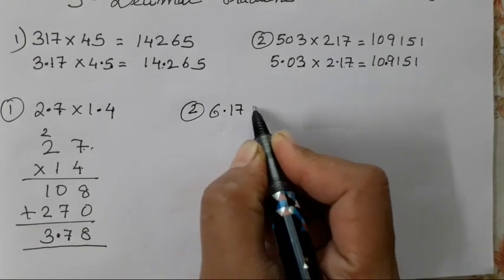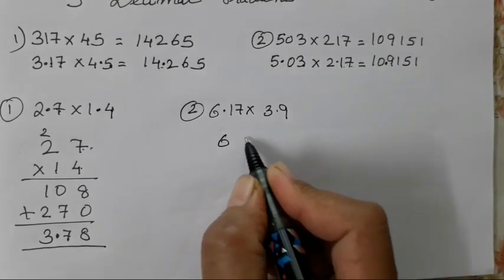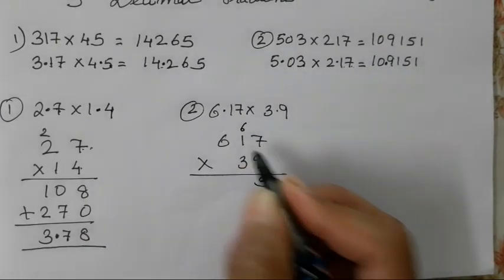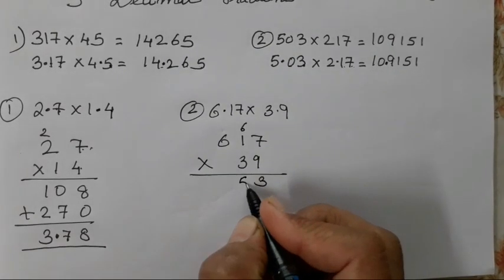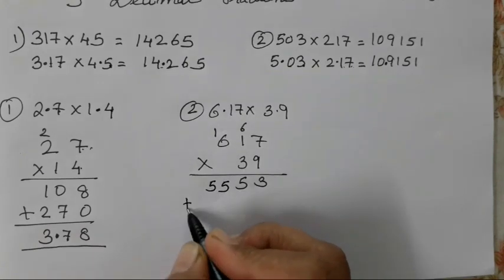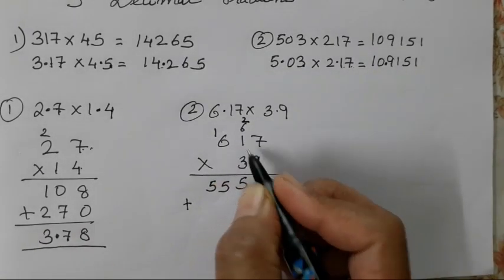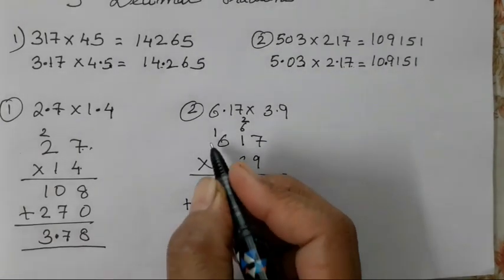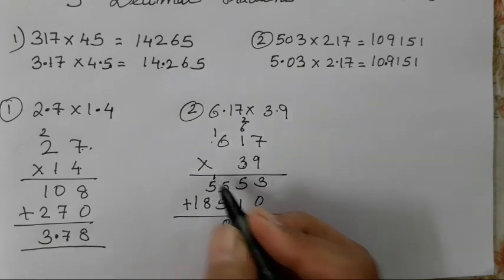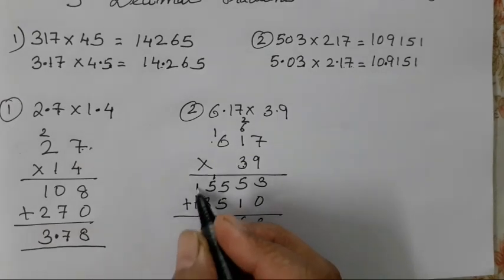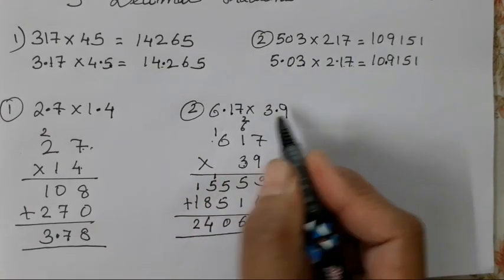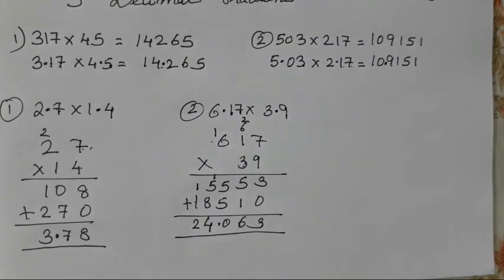Next sum. If you practice in the same way I am showing you, it will be very easy to place the decimal point. Without writing the decimal point first, multiply: 7 nines are 63, 9 ones are 9, carry through — 6 nines are 54, and so on. After completing the multiplication, add the decimal point. After the decimal point in the first number there are 2 digits, and in the second number there is 1 digit. So 2 plus 1 equals 3. Count 1, 2, 3 from the right — the decimal point goes there.